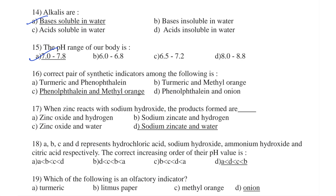Question number 16. The correct pair of synthetic indicators among the following is: Option A — Turmeric and phenolphthalein, B — Turmeric and methyl orange, Option C — Phenolphthalein and methyl orange, Option D — Phenolphthalein and onion. Turmeric, onion, and red cabbage are all natural indicators. Synthetic indicators include phenolphthalein, methyl orange, etc. The correct pair of synthetic indicators is Option C — Phenolphthalein and methyl orange.